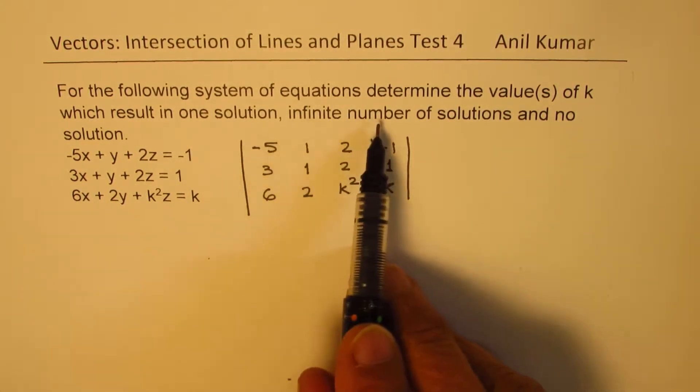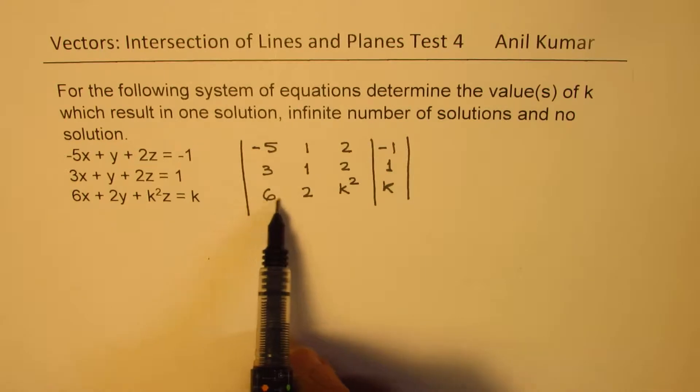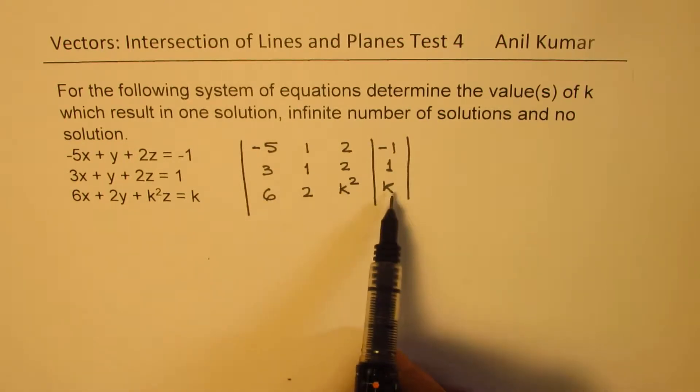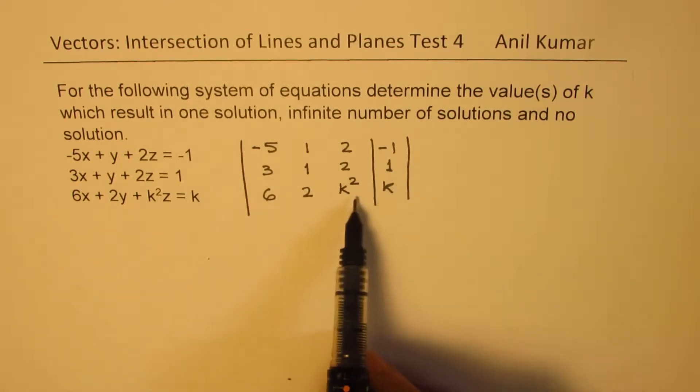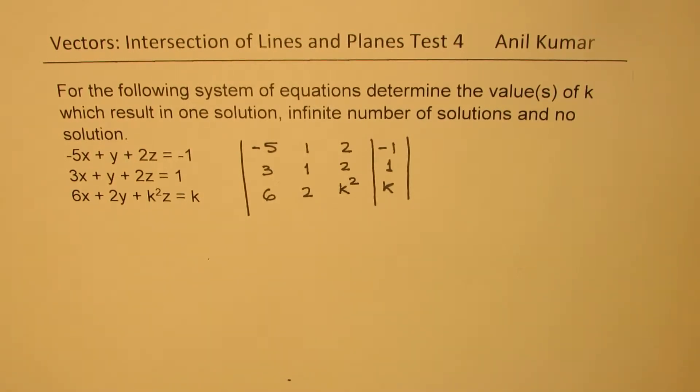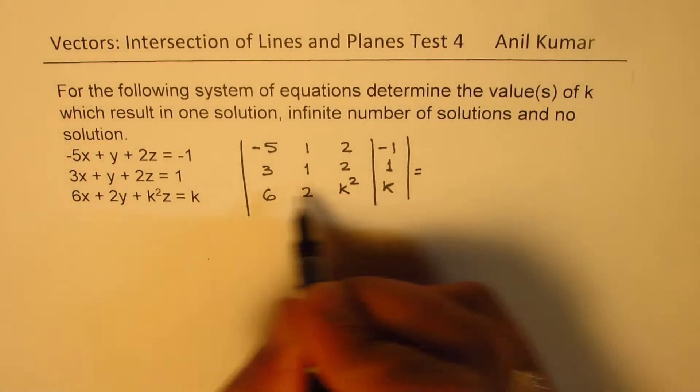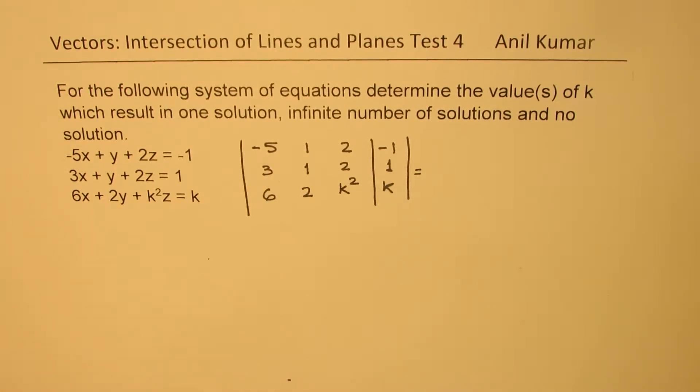For infinite number of solutions, we'll make the last row equal to 0, and that k also equal to 0, to find the solution. So that is the strategy.